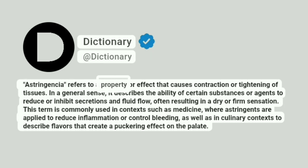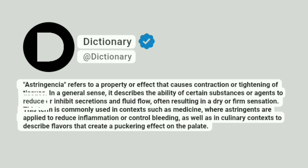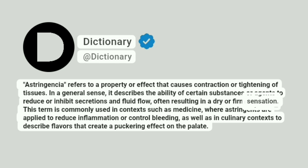Astringentia refers to a property or effect that causes contraction or tightening of tissues. In a general sense, it describes the ability of certain substances or agents to reduce or inhibit secretions and fluid flow, often resulting in a dry or firm sensation.